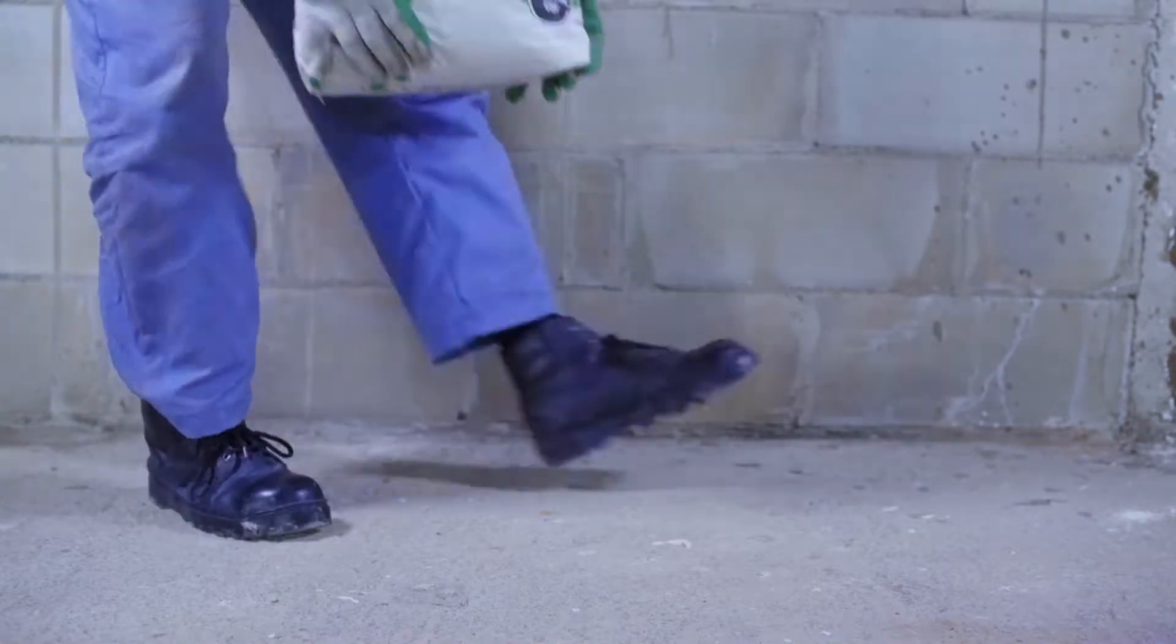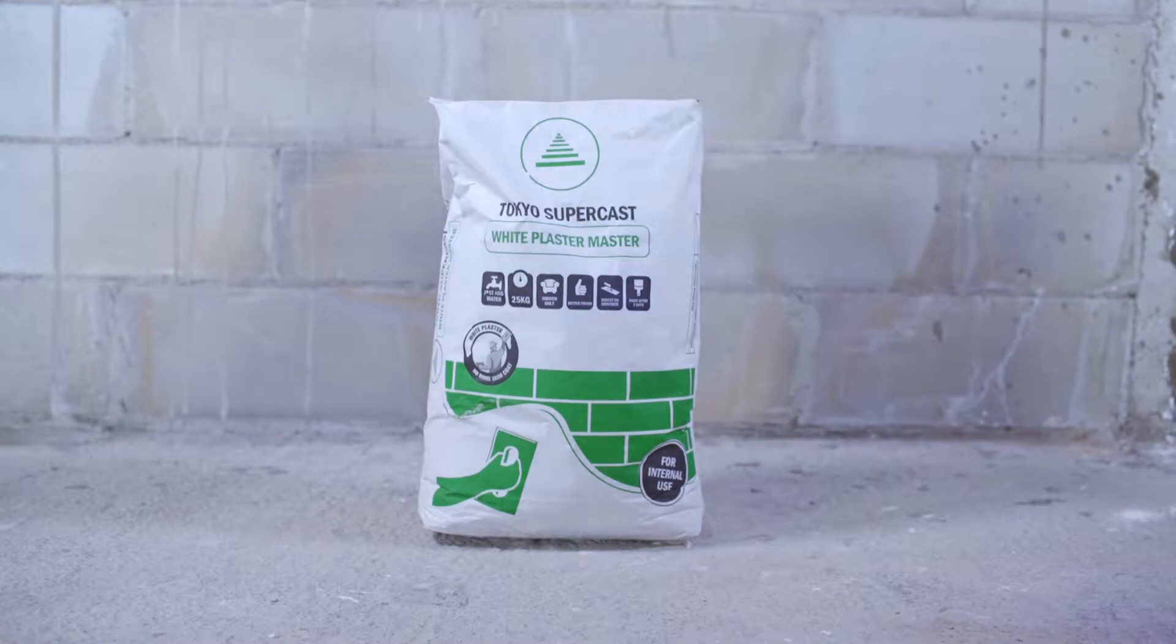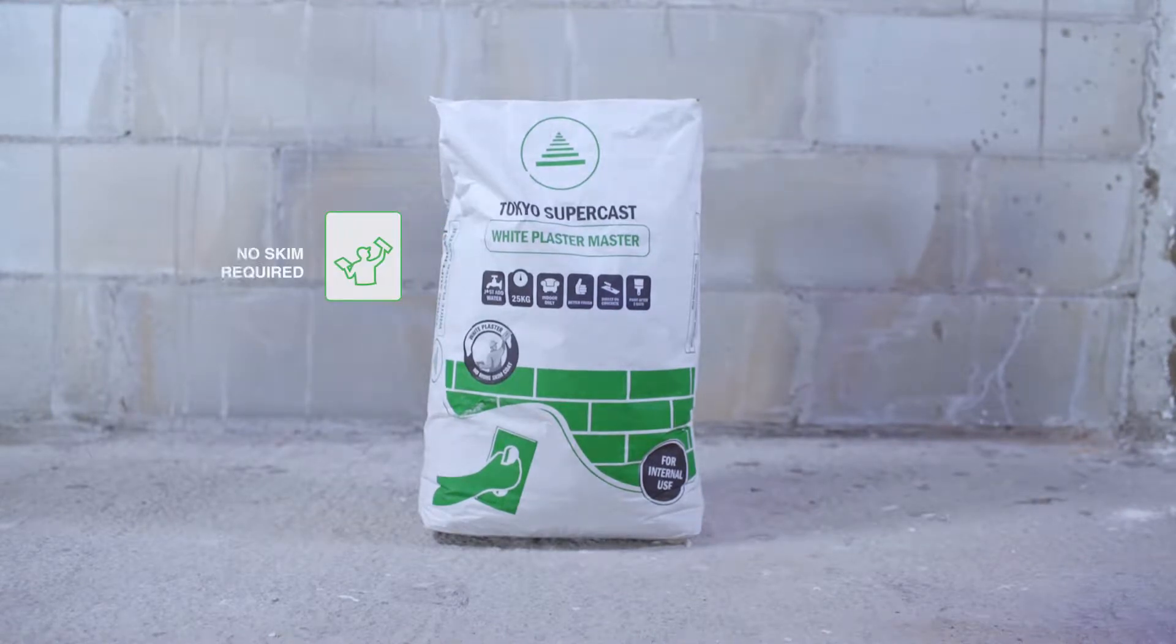Tokyo Supercast White Plaster Master is a single solution that removes several steps out of finishing your walls by removing the extra time and labor of having to skim coat or putty your walls.